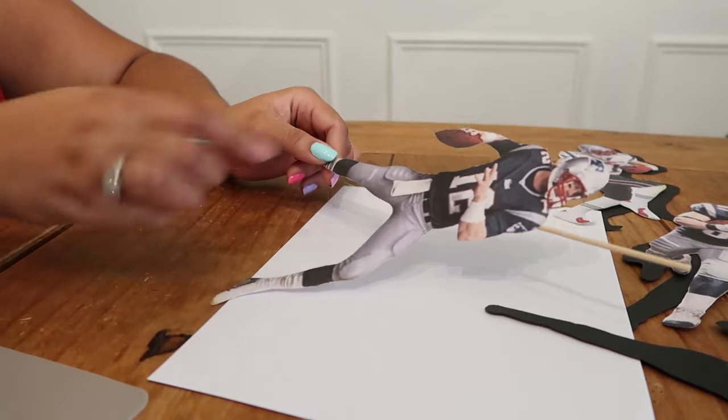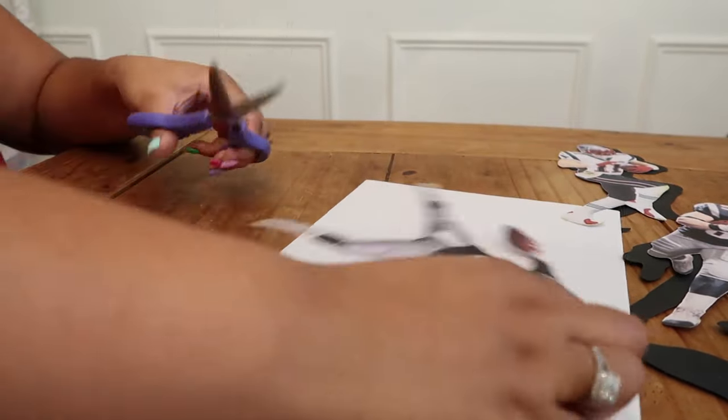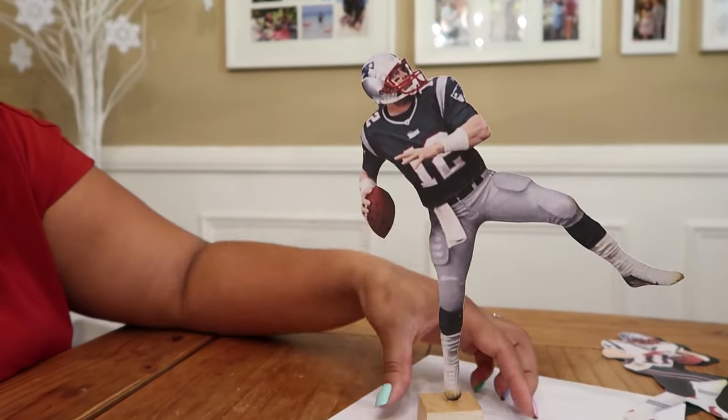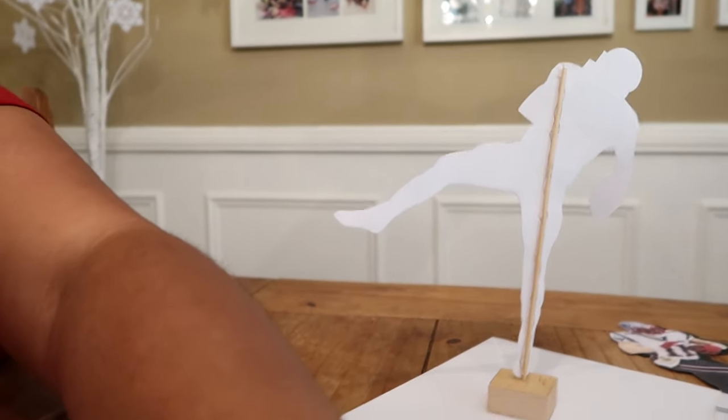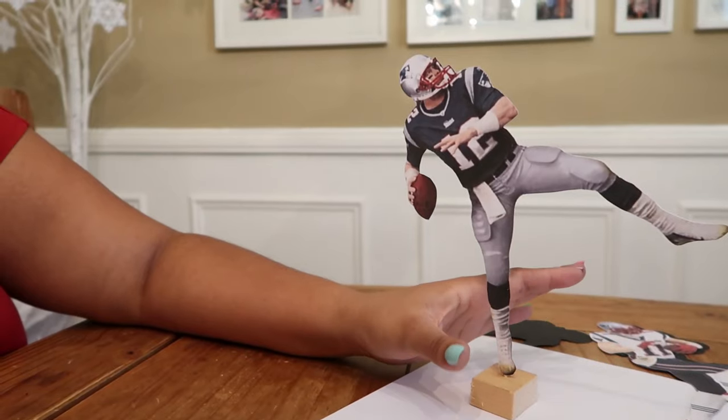So once that is glued on, the excess that's here I'm going to take my scissors and just cut that off. And he's actually able to stand, but because I want it to look a little bit cleaner I'm going to go ahead and glue on the silhouette on the back.